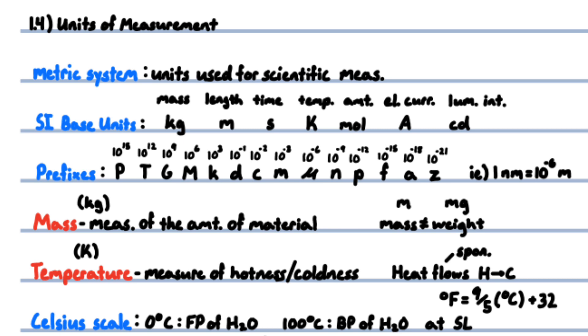Mass is a measure of the amount of material present. SI unit is kilograms. Mass is not the same as weight. Weight is the force that the mass experiences due to gravity.